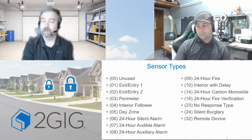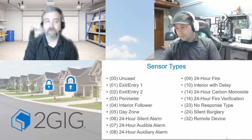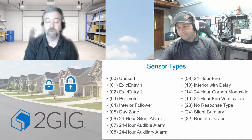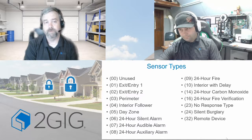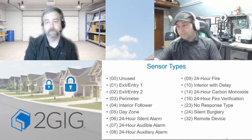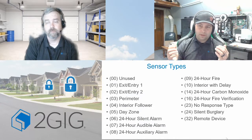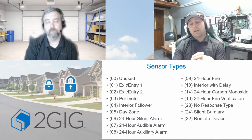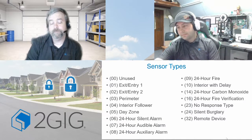After the equipment code, you program the sensor type — basically how you want it to alarm. For most contacts, it's straightforward: doors and windows will use exit/entry one or two, and perimeter. One important note: you cannot connect smokes, COs, or any life safety devices to this panel. Those options may appear but they won't work — it's simply not rated for that.